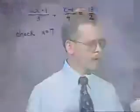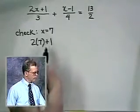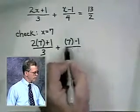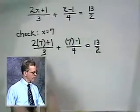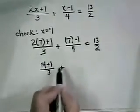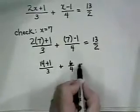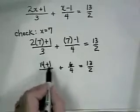We really need to check this to make sure that it checks in our original equation. To do that, we must go back and write (2(7) + 1)/3 + (7 - 1)/4 equals 13/2. That's (14 + 1)/3 and (7 - 1) is 6, over 4, equals 13/2.